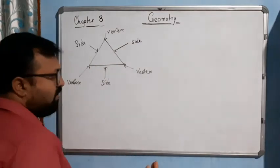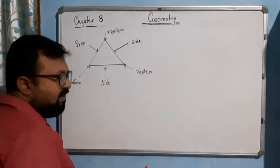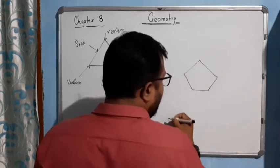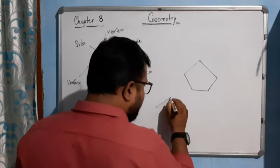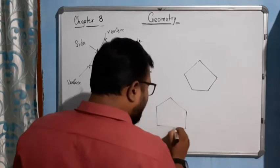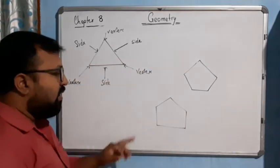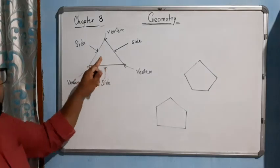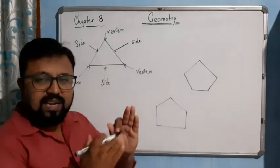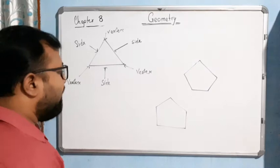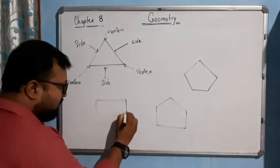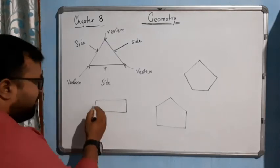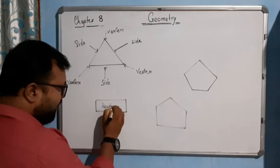Suppose if I want to draw a polygon made of five line segments, it will look like this — it should be a five-sided figure, then it is known as a pentagon. When three sides are there we call it a triangle, when four sides are there we call it a square, or maybe rectangle also — a four-sided figure polygon. It has four sides, it is a rectangle.